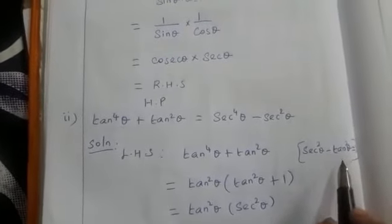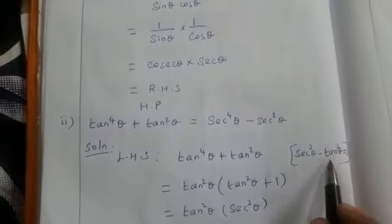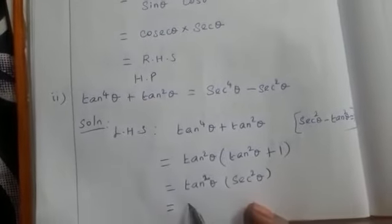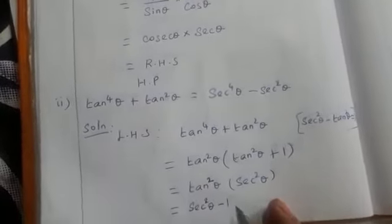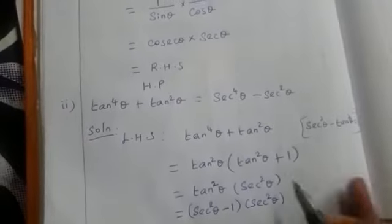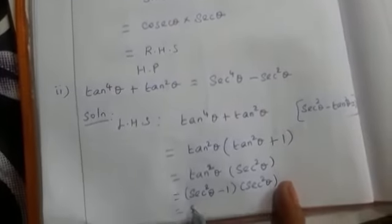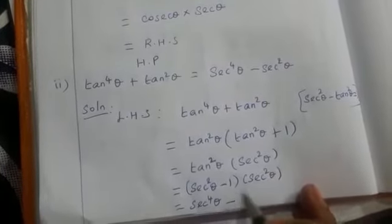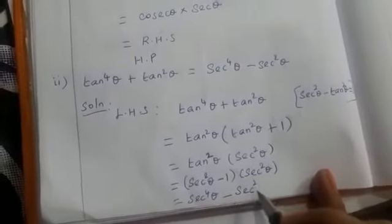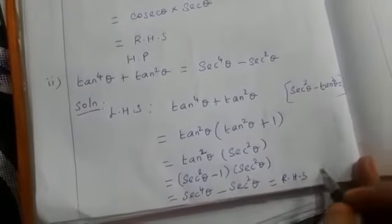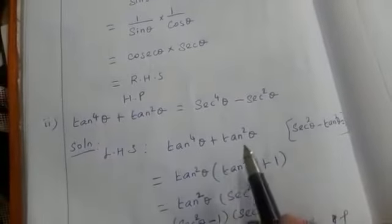Using the same identity, we can write tan squared theta as sec squared theta minus 1. Substituting, we get (sec squared theta minus 1) into sec squared theta. Multiplying both terms gives sec to the power 4 theta minus sec squared theta, which is our RHS. Hence proved.